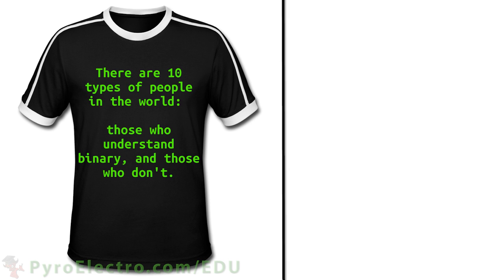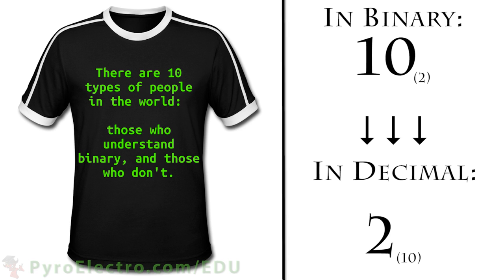This idea is the heart and soul of how different number systems work. Let's take another quick look at a joke t-shirt. It reads, there are ten types of people in the world, those who understand binary and those who don't. The joke here is that ten, or one zero, in the binary number system represents two in the system that we're all familiar with called the decimal number system.